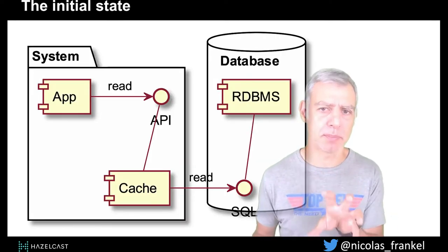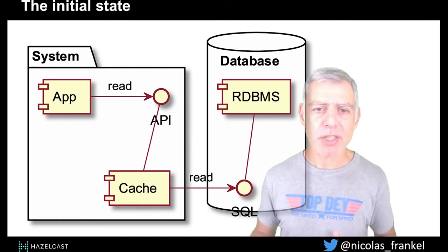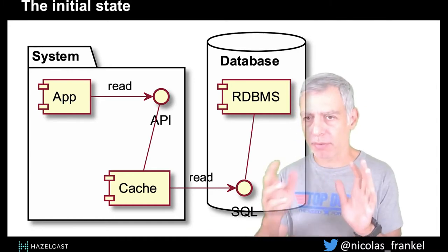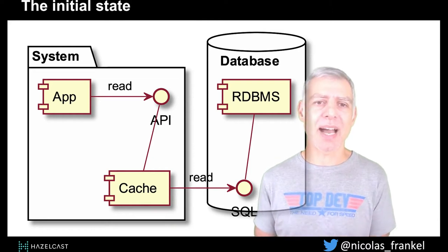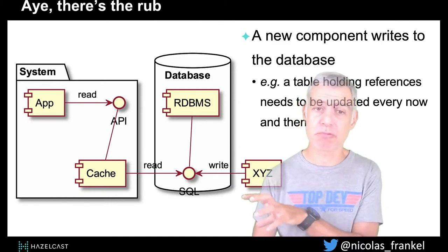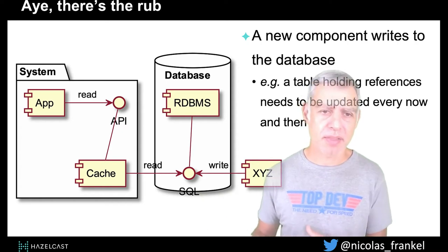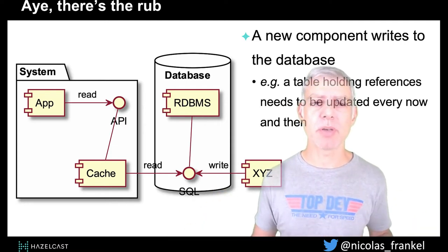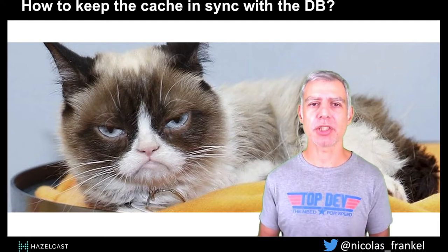Let's keep our example simple — a single application and a database. In between, we have a cache that acts as a facade. Every time we do an operation, either read or write, we go through the cache. When we write, we write to the cache, and the cache writes to the database. The ideal is not always there because you have a third-party component writing directly to the database — often a table holding references that need to be updated periodically. So the question is: how do we keep the cache in sync with the database?